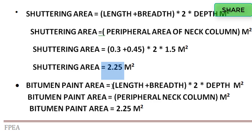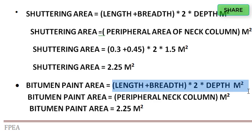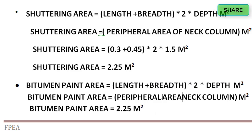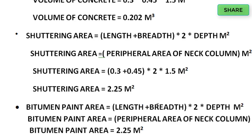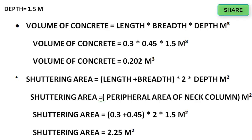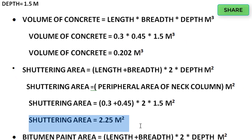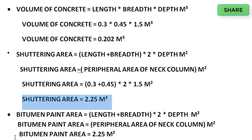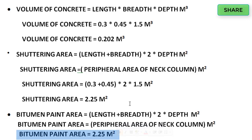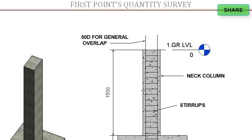The peripheral area of the neck column is the shuttering area. The value is 2.25 square meters. So the answers are: volume of concrete 0.202 cubic meters, shuttering area 2.25 square meters, and bitumen paint area 2.25 square meters.